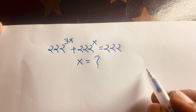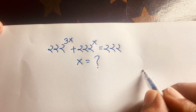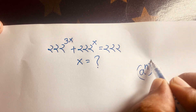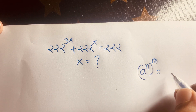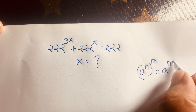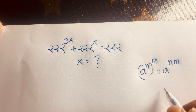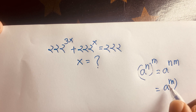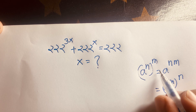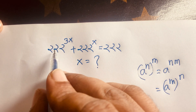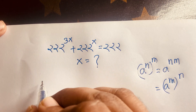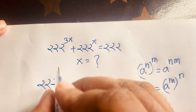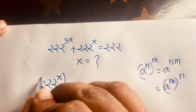To solve this, we use the exponential rule: a to the power n, whole to the power m, equals a to the power n times m. So 222 to the power 3x can be rewritten as 222 to the power x, whole to the power 3.